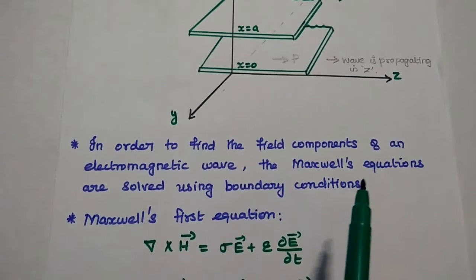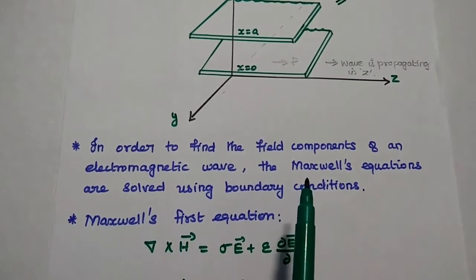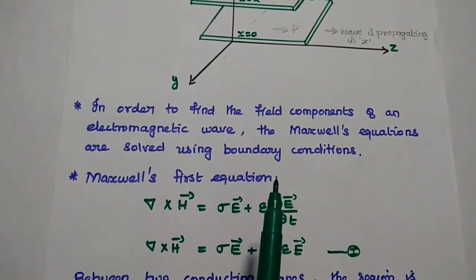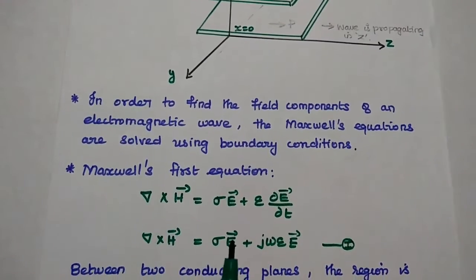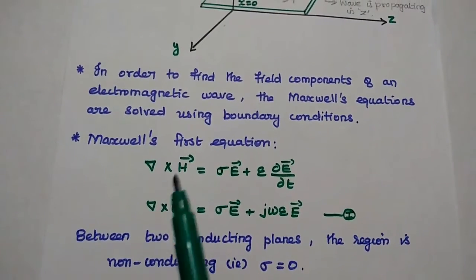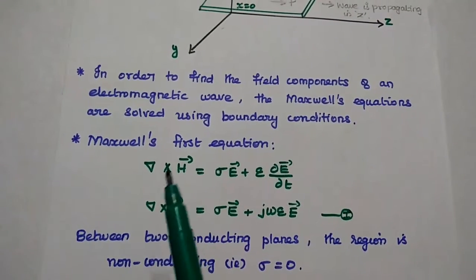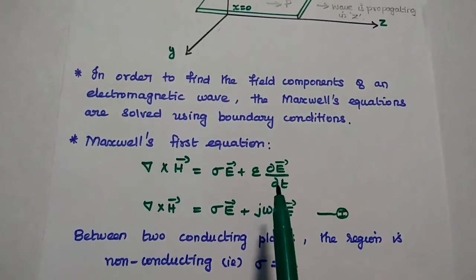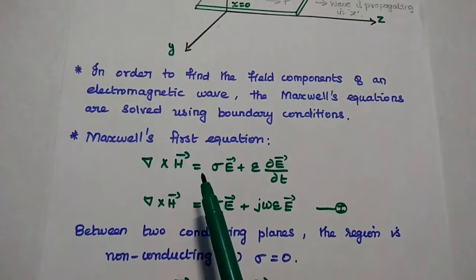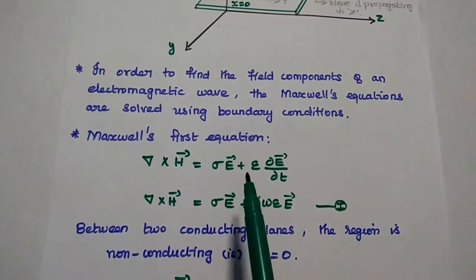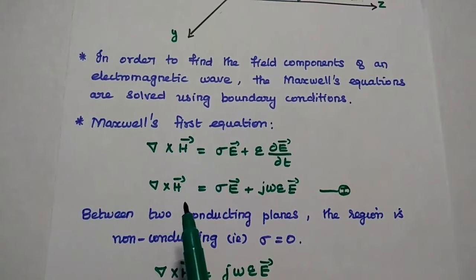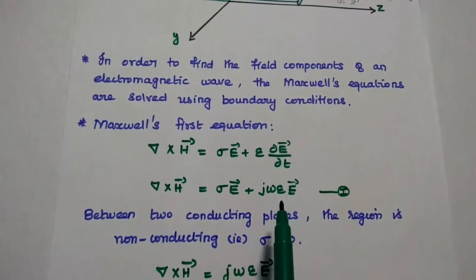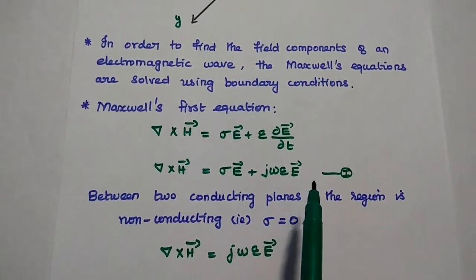We are going to derive the field components of the electromagnetic waves between the parallel planes using Maxwell's equations with their boundary conditions. Maxwell's first equation is: del cross H = σE + ε(∂E/∂t), which can also be written as del cross H = σE + jωεE. Consider this as Maxwell's first equation.